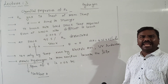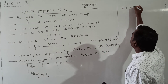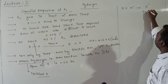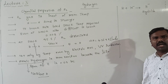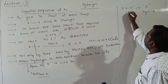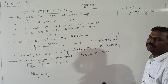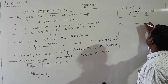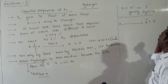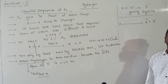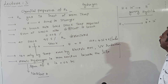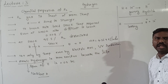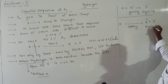If hydrogen gains one electron, it gives rise to H⁻, which is called hydride. If hydrogen loses one electron, H⁺ is formed. In chemistry, when an electron is lost, we assign a positive sign. Losing one electron gives a proton, also called the hydronium ion.